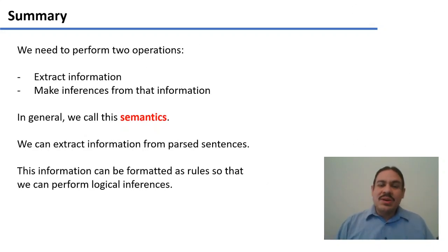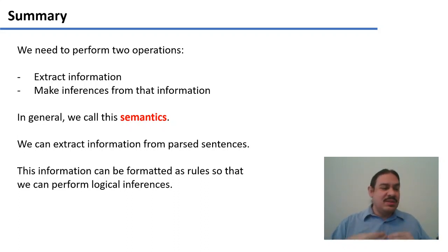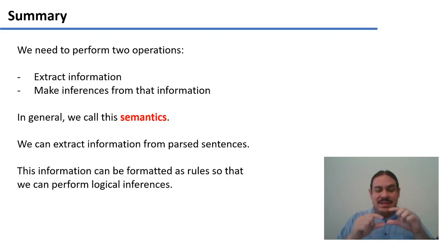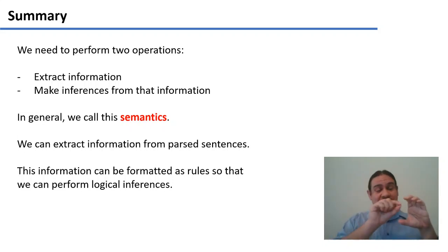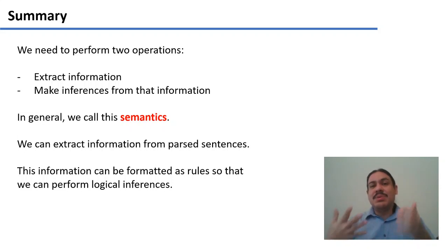In summary, when we're trying to handle information and ultimately generate knowledge, we need to perform two operations. We need to extract information from our text or language in general, and we need to perform inferences so that we can derive new knowledge and answer questions. In general, we call this process semantics — or more specifically, formal semantics. We can extract information from parsed sentences and format these as rules that we can perform logical inference on. A knowledge graph, for example, formats these as entities and relationships that connect them. You need a system that connects entities through rules or logical functions so that you can then compute inferences on them.